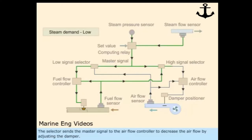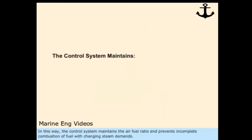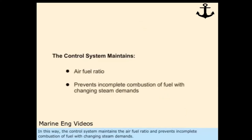The selector sends the master signal to the air flow controller to decrease the air flow by adjusting the damper. In this way, the control system maintains the air-fuel ratio and prevents incomplete combustion of fuel with changing steam demands.